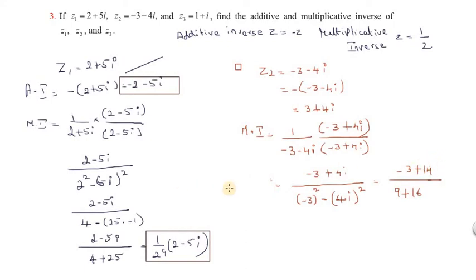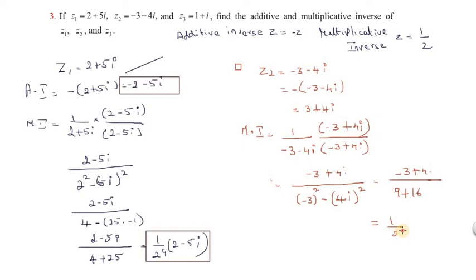Sorry, correcting: the numerator is minus 3 plus 4i. So the answer for the multiplicative inverse of Z2 is 1 by 25 into (minus 3 plus 4i).